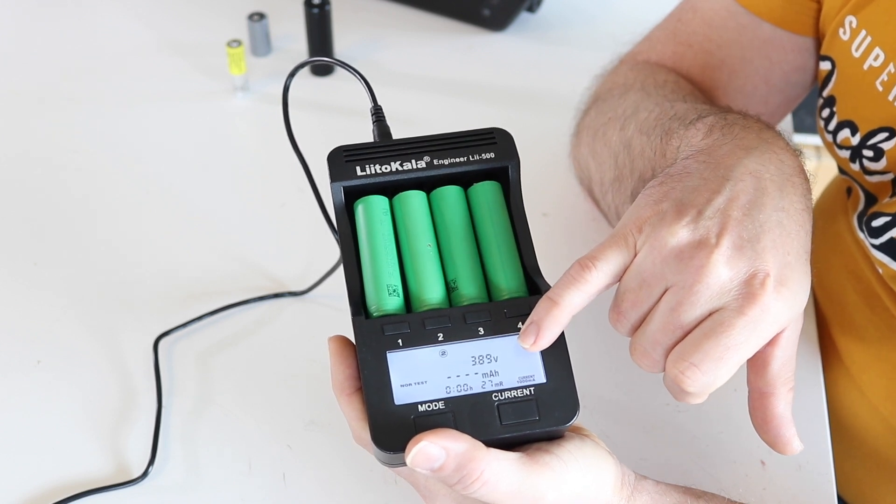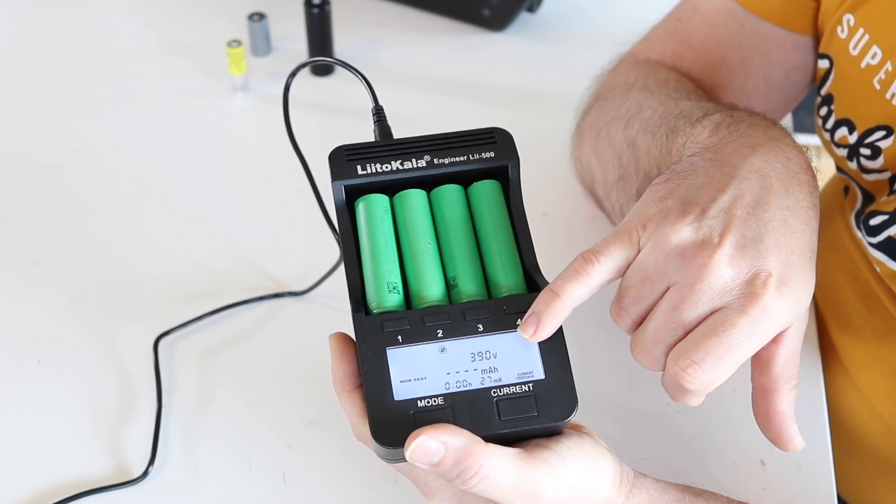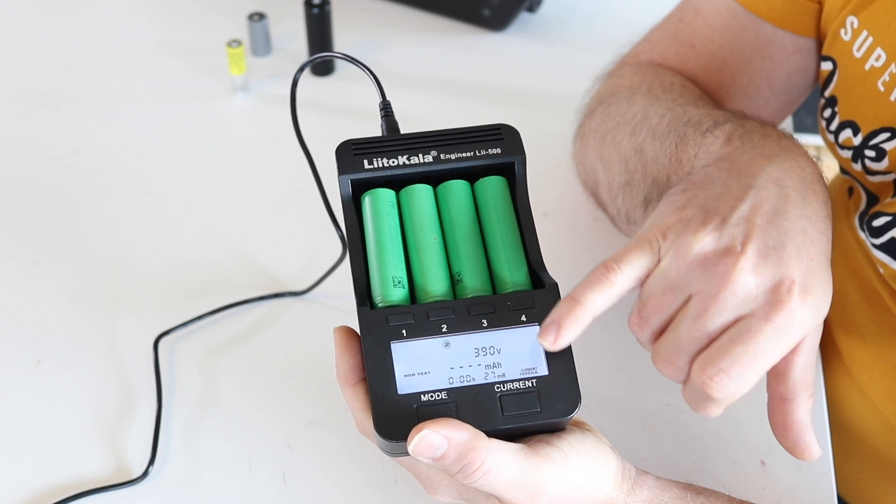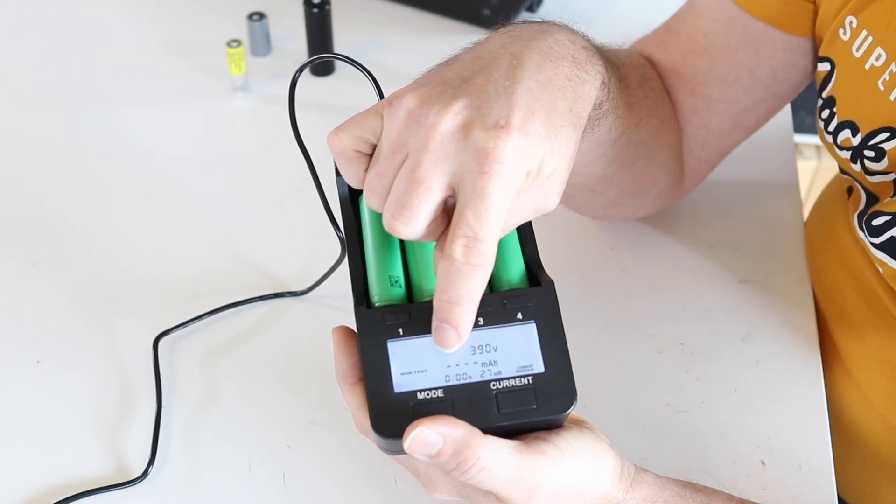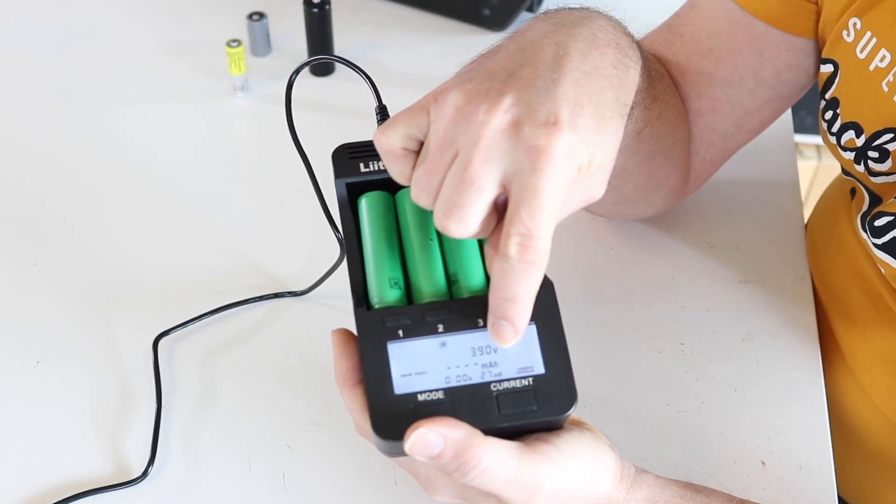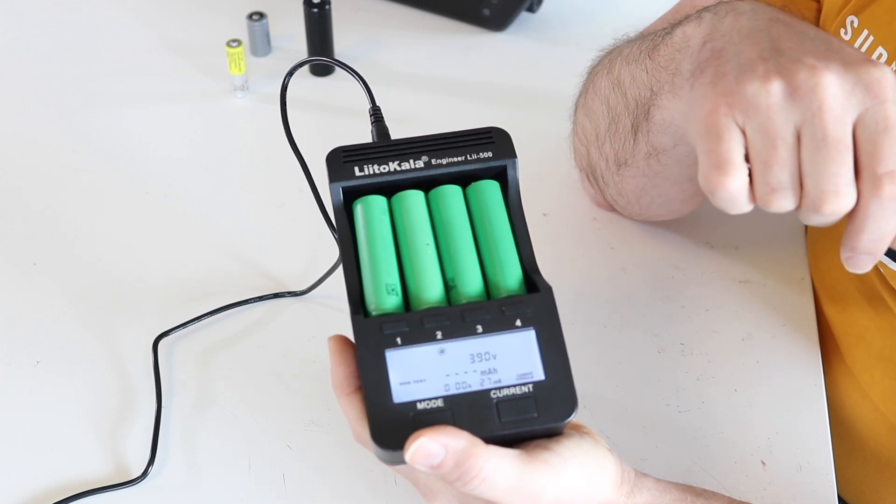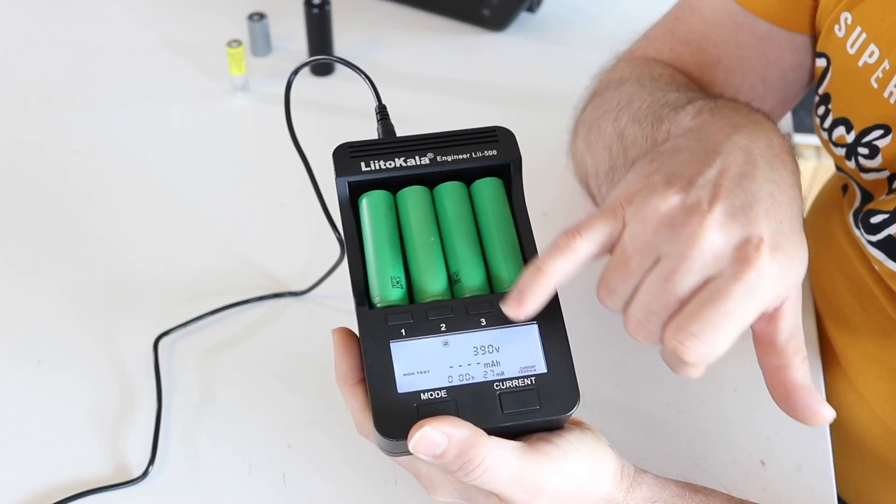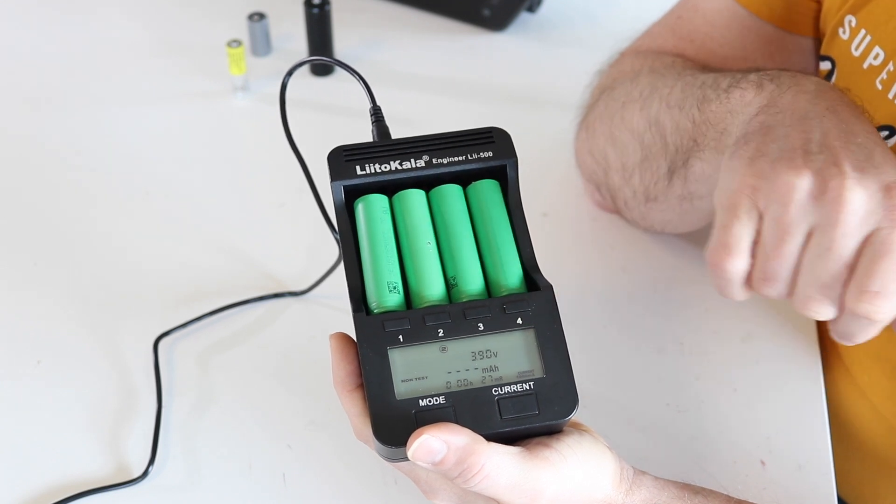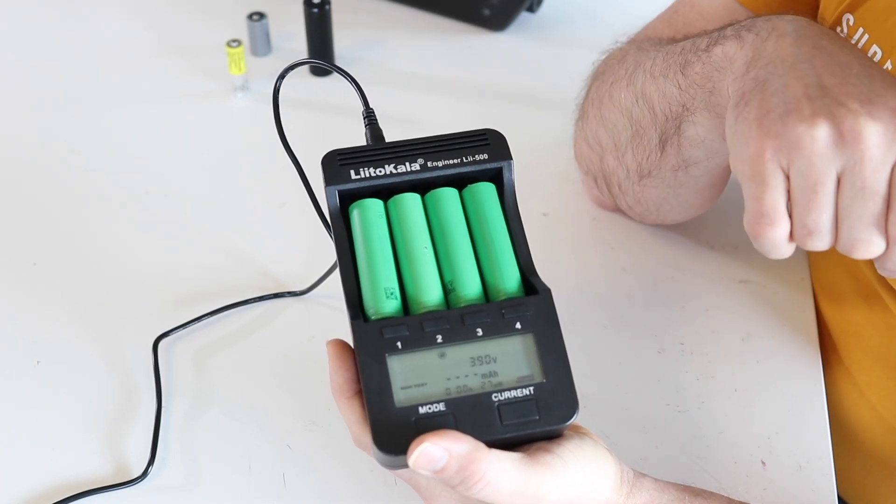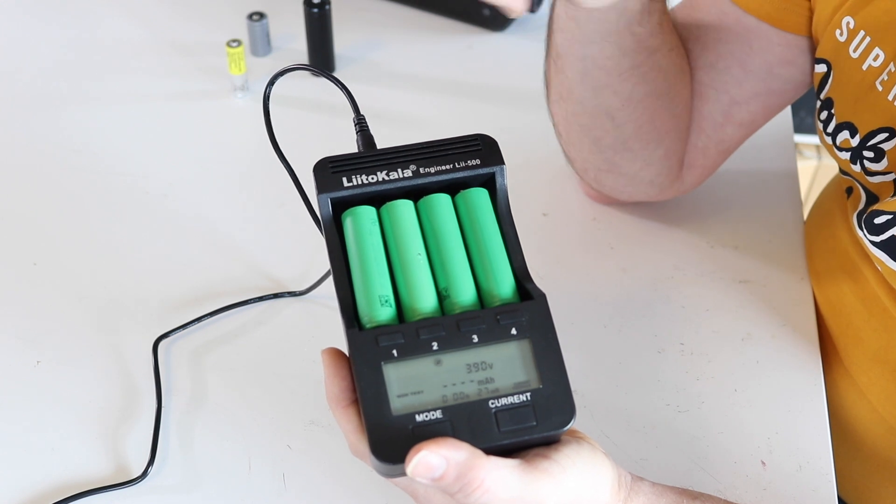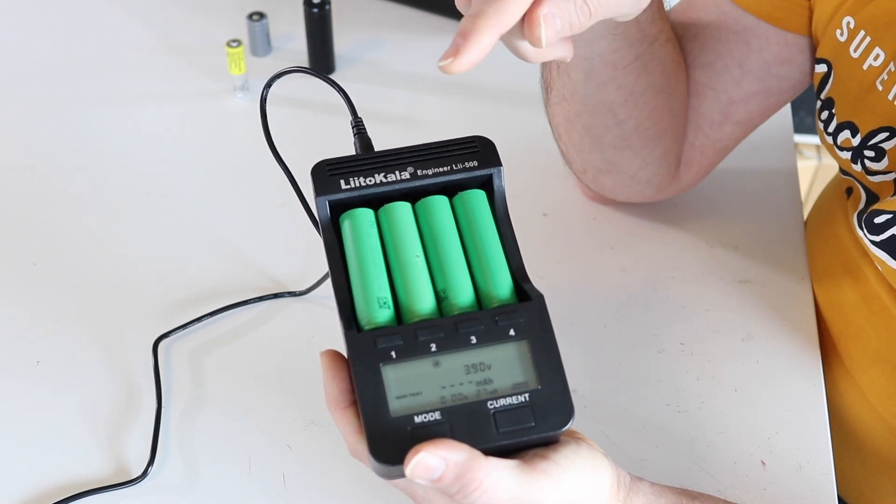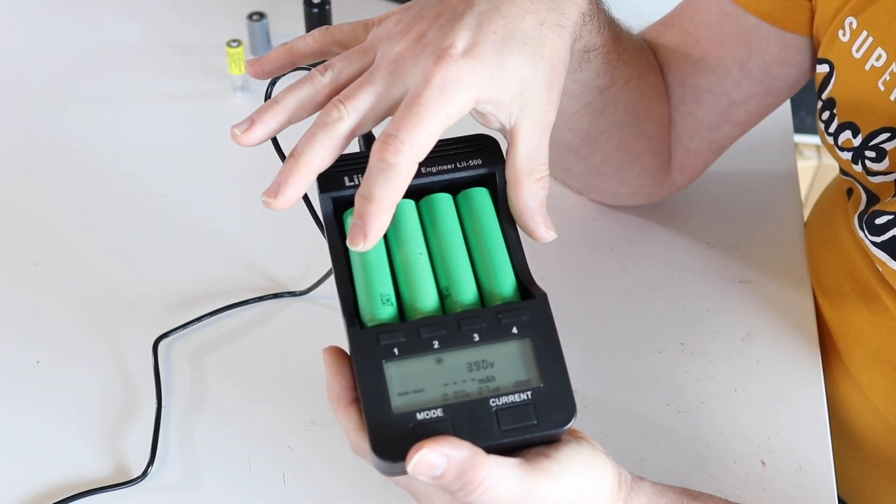If it's at 4.2 volts, it will discharge until 3 volts. Then you will see here the amount of milliamp-hours that is in the cell, and it will also automatically charge again to 4.2 volts. That way you have cycled the complete cell and you know what is the capacity inside.